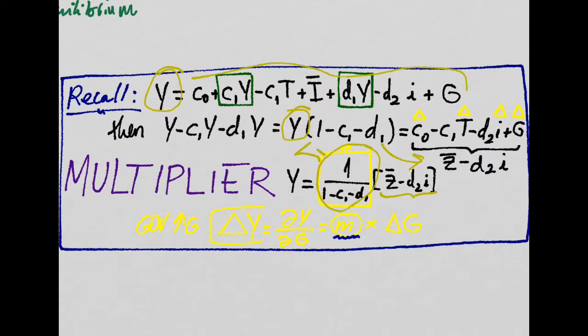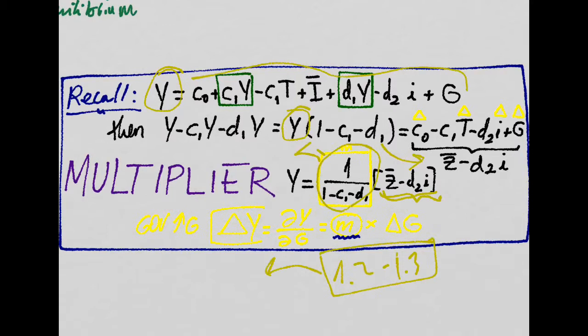So what's the meaning of the multiplier? Imagine the multiplier was like 1.2, 1.3, something like that. Okay, so any change in any element here will be amplified by the multiplier to get another change in output. So if the multiplier is higher than 1, it is an amplification. It is amplifying the shocks of these variables that do not depend on y.